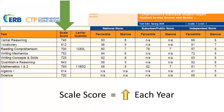By converting each score to a scale score, this allows your student's score to be compared year after year. Your student's scale score should increase each year. You will not be able to compare your student's scale score between different test brands, but you can compare scale scores on the CTP year after year.